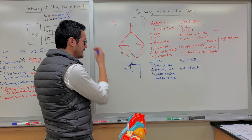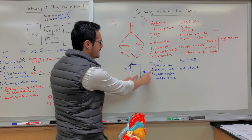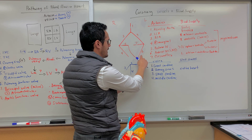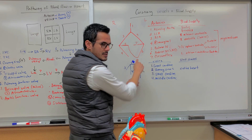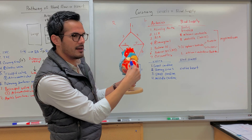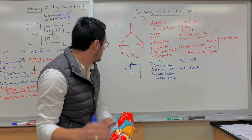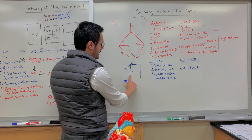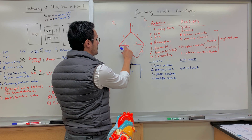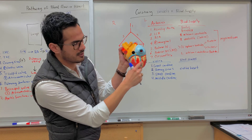If you look at the schematic, you'll see some overlapping. The great cardiac vein sits right next to the anterior interventricular — the LAD — and you can see that on the model with the LAD coming down and the great cardiac vein overlapping it. The middle cardiac vein sits right next to the posterior interventricular on the back side, and you can see both of them right next to each other.